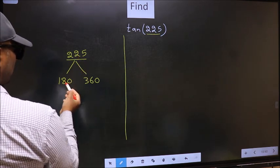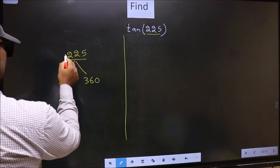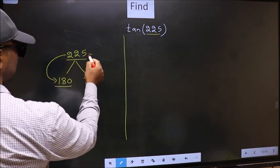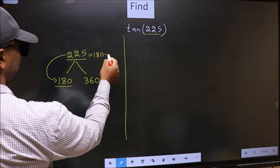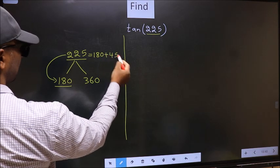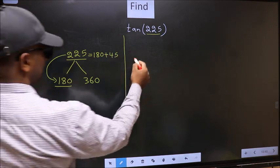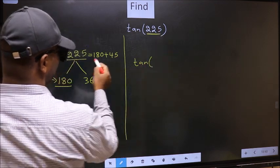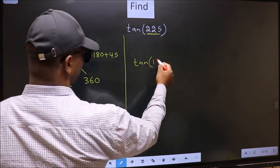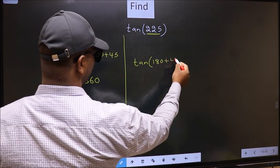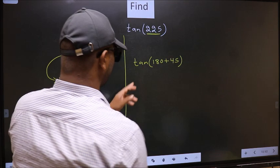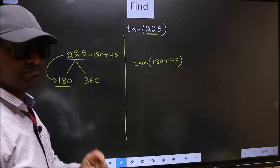Next, 225 is close to which number? This is close to 180. So in place of this, now we should write 180 plus 45. So this will become tan, in place of this we write 180 plus 45. This is your step 1.